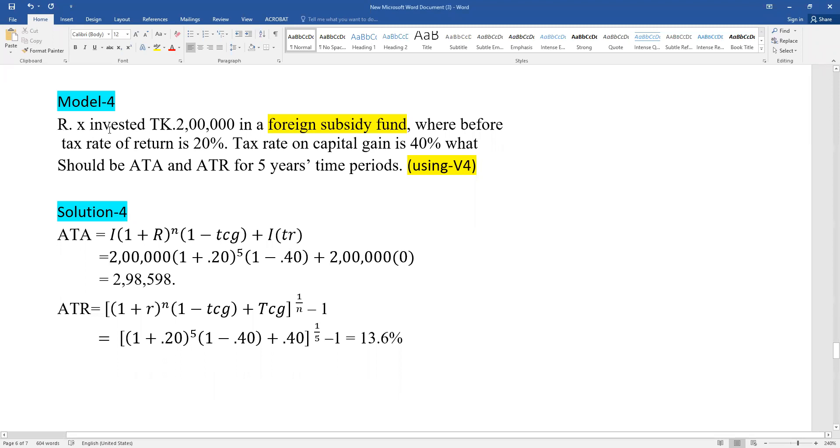Model 4: RX invested TK 2,00,000 in a foreign subsidy fund. The before tax rate of return is 20%, income rate is 20%, and tax rate on capital gain is 40%. What should be the ATA and ATR after five years?